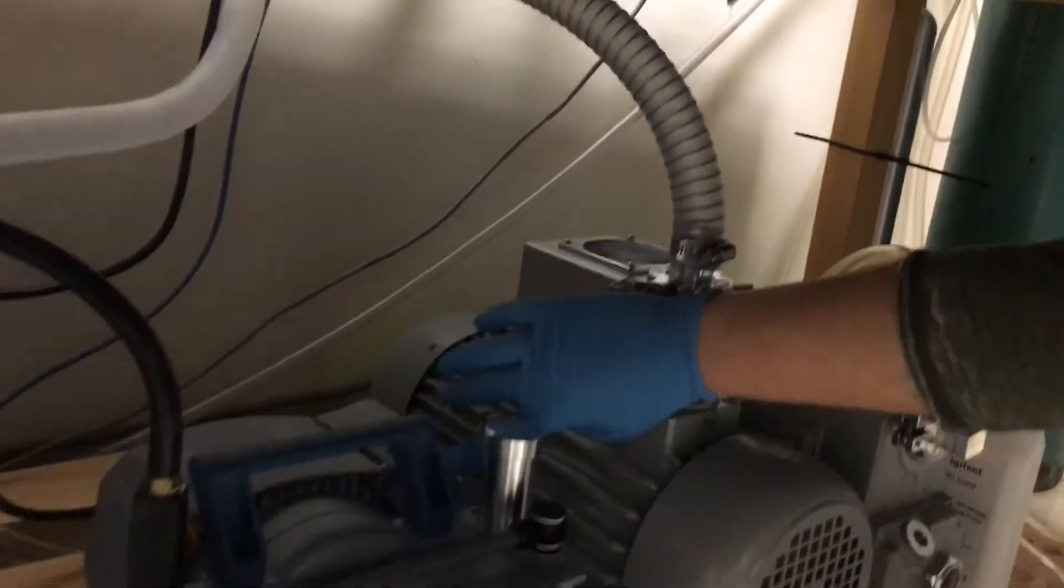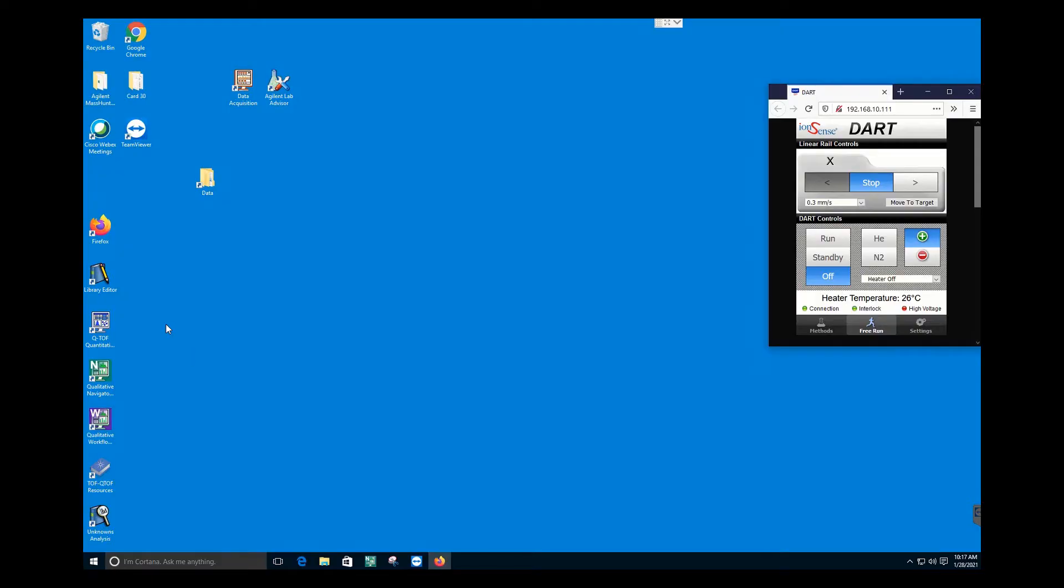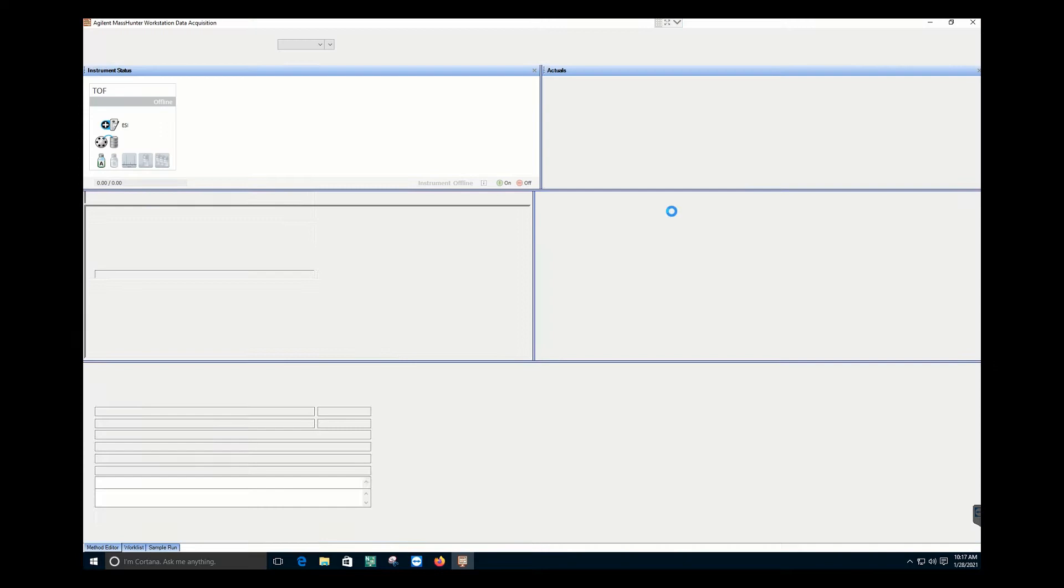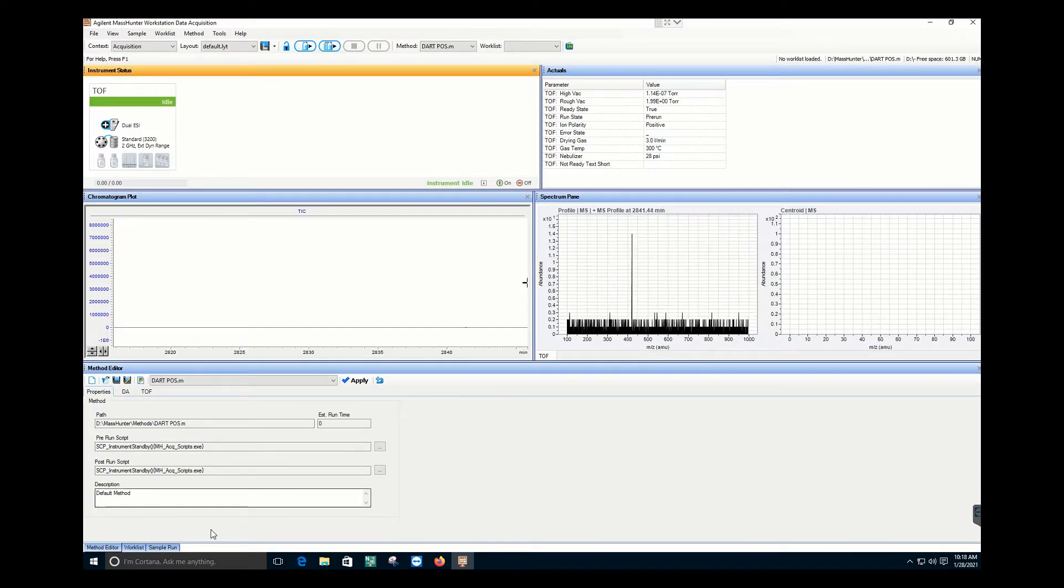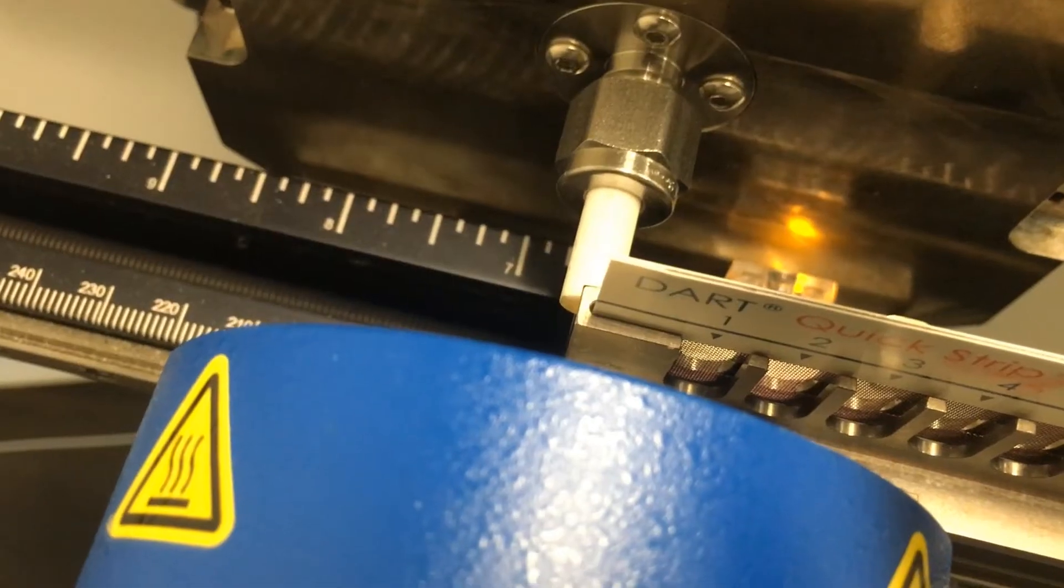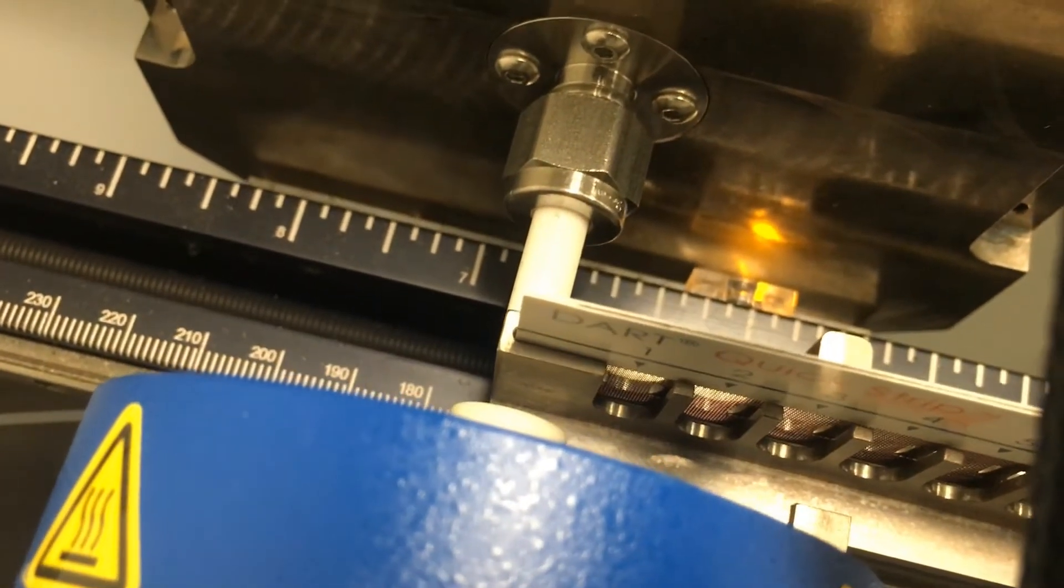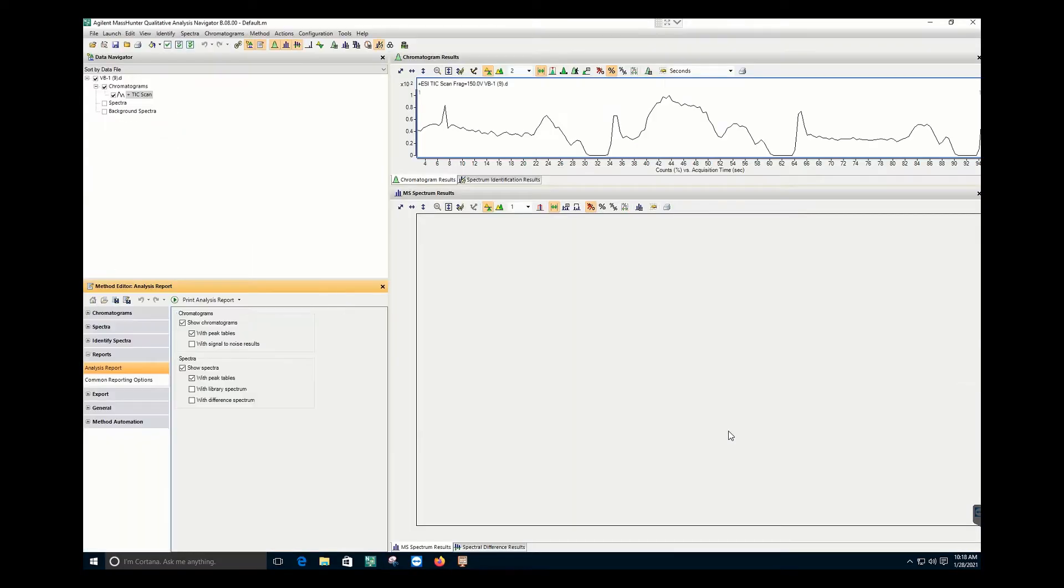DART stands for Direct Analysis in Real Time. It is a new ionization for rapid, non-contact surface sampling of compounds. Operating at ambient pressure with the sample at ground potential, the source enables near instantaneous determination of sample composition by using mass spectrometry. Electronic or vibronic excited state species generated in the source interact with reagent molecules and polar or non-polar analytes present near the inlet of the mass spectrometer.